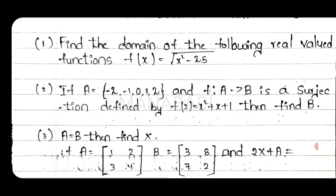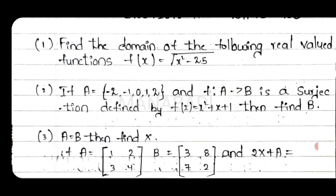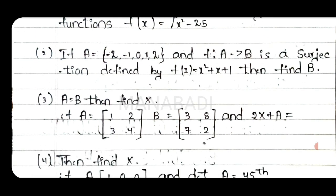If A is equal to the set of values minus 2, minus 1, 0, 1, 2, then find the b value. We have the a values, we have an equation, we have a b value. 2x plus a — this equation, we have x value. A equals to b, find x.